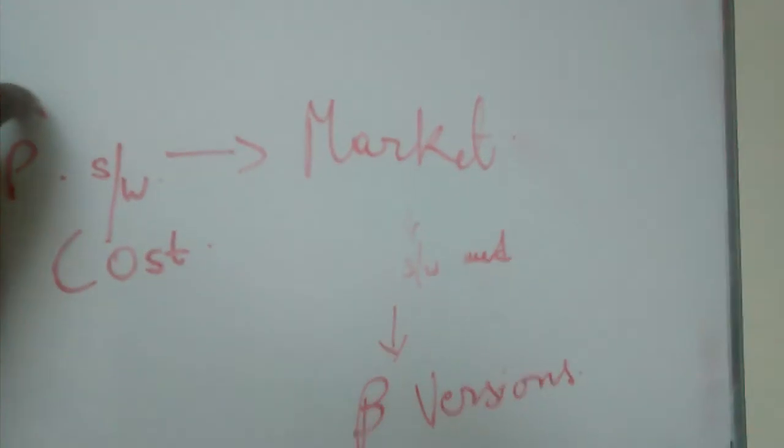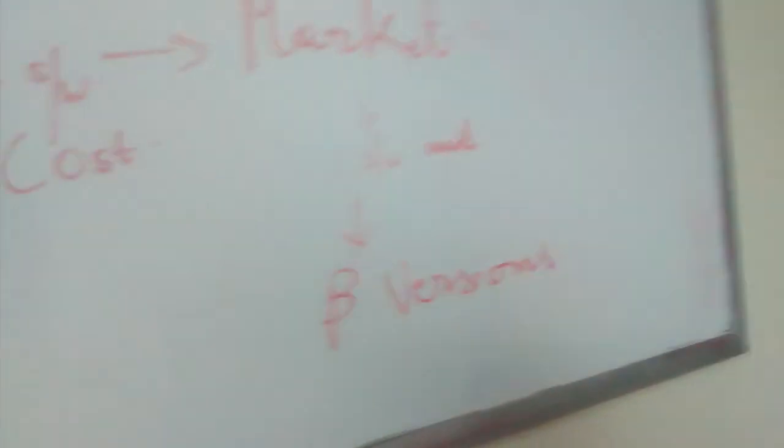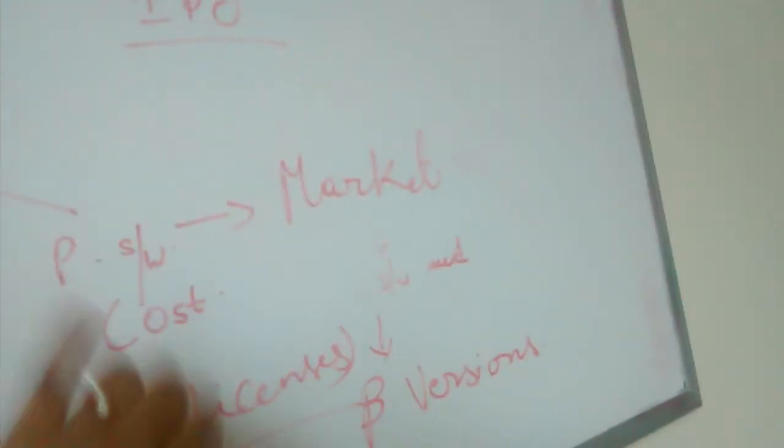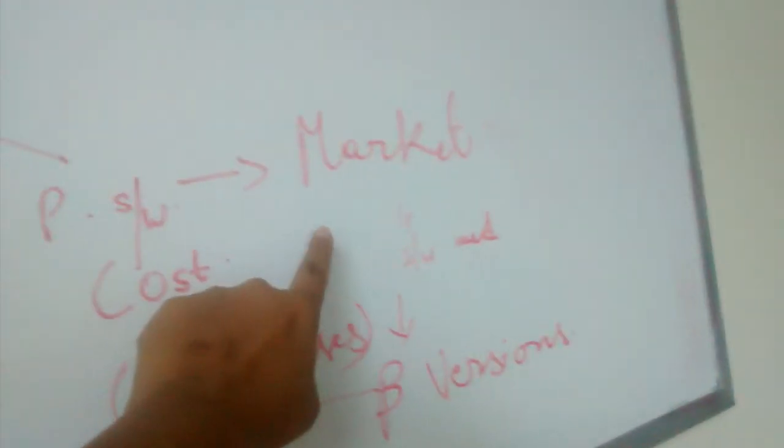Once the software is developed, they release beta versions. Beta versions are nothing but trial versions. A product-based company, once they analyze that a particular software is hugely in demand in the market, will invest their cost, develop that software, and release beta versions. Companies that need the software — for example, banks — will approach this product-based company and buy licenses to use the product they have developed. A product-based company, unlike a project-based company, will not have any client, but they understand the market's requirement, develop their own software, and sell licenses to companies that want their product.